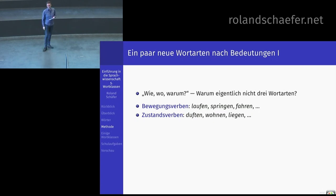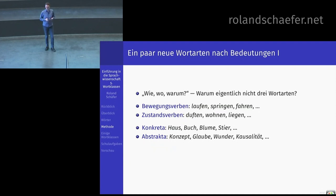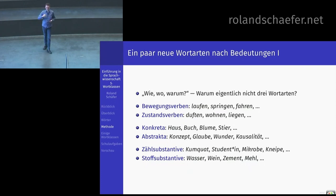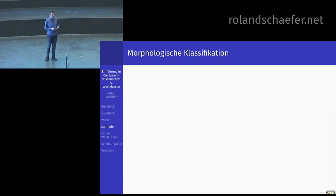Die Dinge flektieren gleich – aber dann ist Bedeutung nicht der Punkt. Wir könnten konkrete Substantive wie Haus, Buch, Blume von abstrakten wie Konzept, Glaube, Kausalität trennen. Warum nicht? Oder Zählsubstantive wie Kumquat, Student, Mikrobe von Stoffsubstantiven wie Wasser, Wein, Zement unterscheiden – das ist auch ein Forschungsgebiet. Könnten wir alles machen, machen wir aber nicht. Warum? Weil Wortklassen nur um viele Ecken dann irgendwann etwas mit Bedeutungen zu tun haben, und dann auch nur ganz bestimmte Wortklassen.